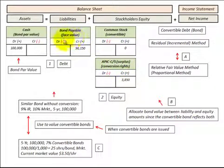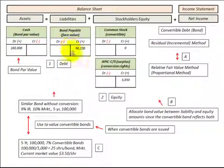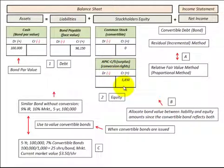That bond has to be divided up between the debt and equity portion, and we're going to look at this when we issue the bond, making comparisons between these two methods. We're going to be using the bond's par value as our basis for making our debt and equity proportions. The reason we have to allocate the debt and equity portion of this bond is because it represents both a liability and an equity to the company.